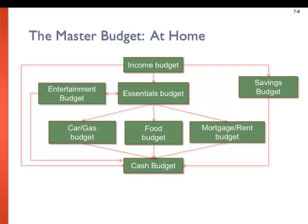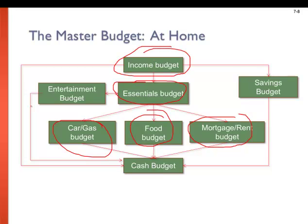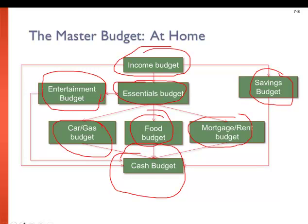Depending on how much money you make monthly, you will spend accordingly on the essentials you need, such as food, rent, mortgage, or the kind of car you drive and the amount of gas you put in your car — all driven by your income. If you made $10,000 a month, you probably live in a really nice house and spend a good chunk on your mortgage. That mortgage or rent you're paying is a budget in itself. The amount spent on essentials or entertainment, the amount you put into savings — all those things impact your cash budget. All these things have their own budget, but they're all interconnected, and they all comprise your master budget.